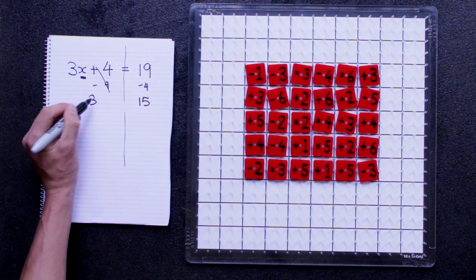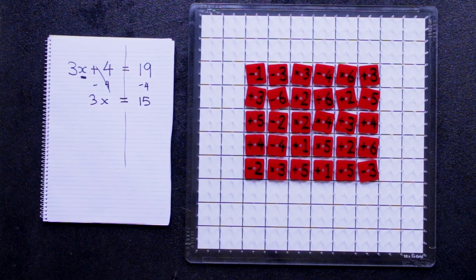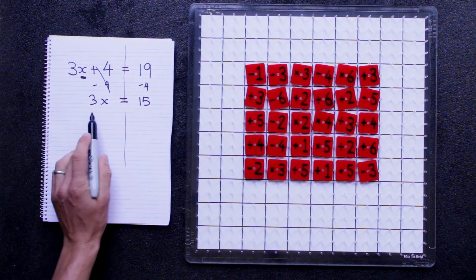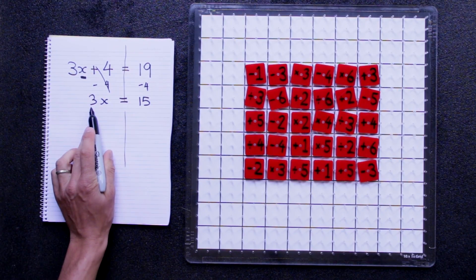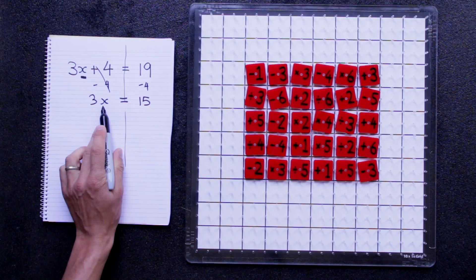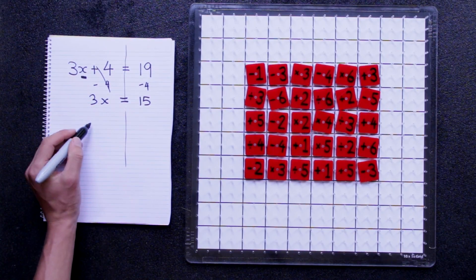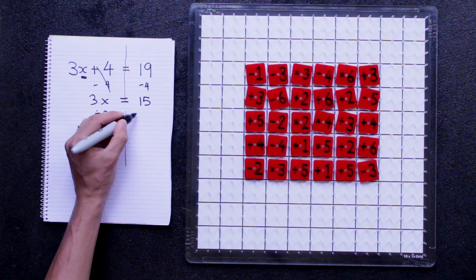So now we've got 3 lots of that person equals 15. And now we don't want to find out what triple of them is. We want to find out what they are by themselves. So we need to divide to get rid of that 3. So we divide on both sides by 3.